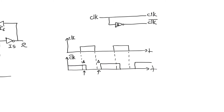This creates a period of time when the positive edge of the clock comes, called a 1-1 overlap period, and a period of time when the clock goes down, called a 0-0 overlap. So we have two overlap periods: one where both clock and clock bar are 1, and one where both clock and clock bar are 0.